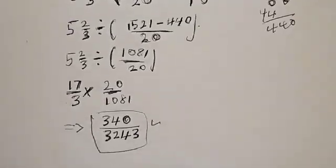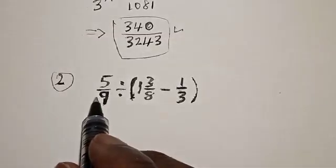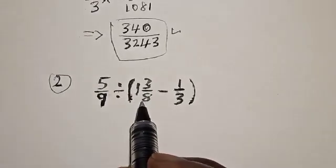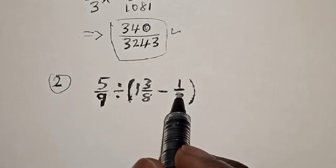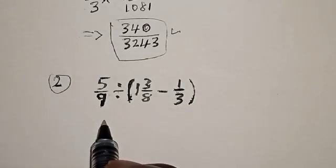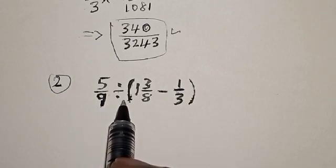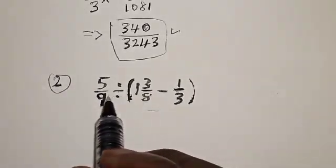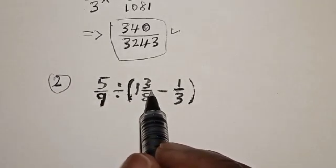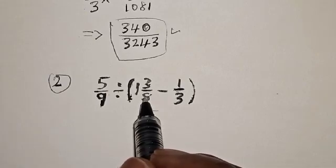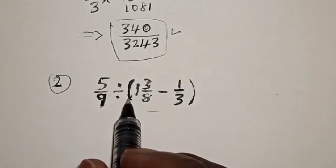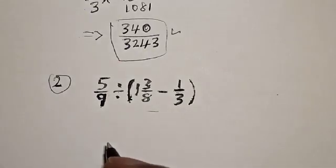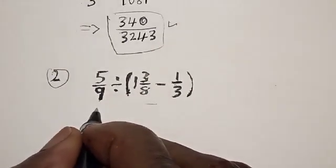Let's solve one more question. Number 2: 5 divided by 9, divided by open bracket 1 and 3/8 minus 1/3, close bracket. We also use BODMAS. The first operation is bracket — we work with what's in the bracket first. There is no 'of' in this question, then followed by division, then multiplication, then addition and subtraction.